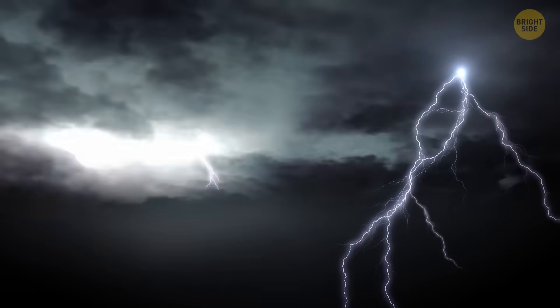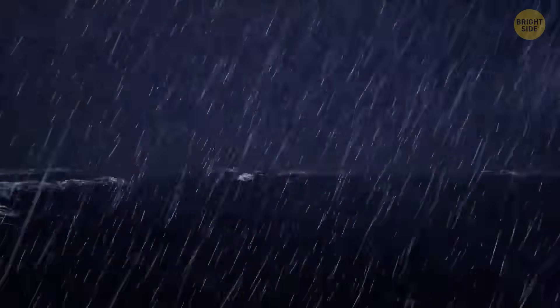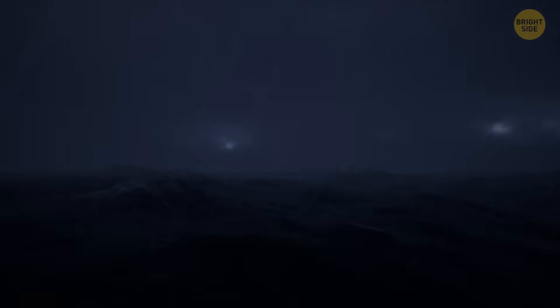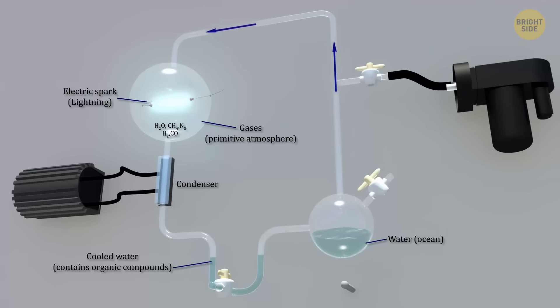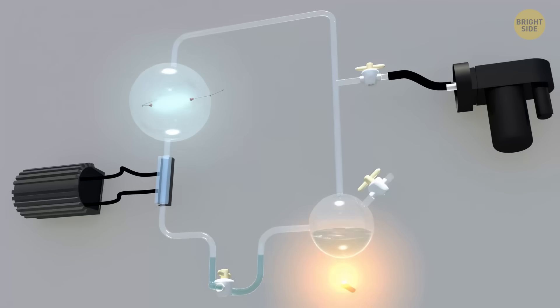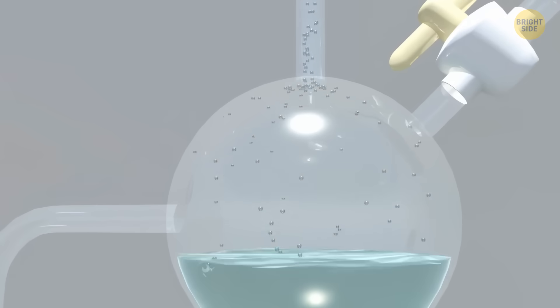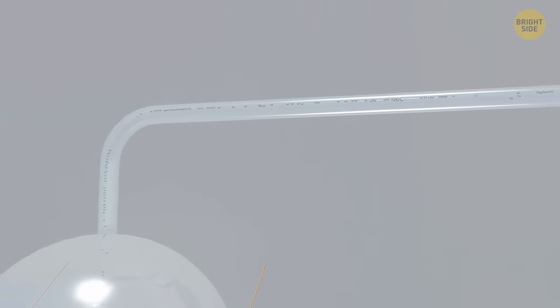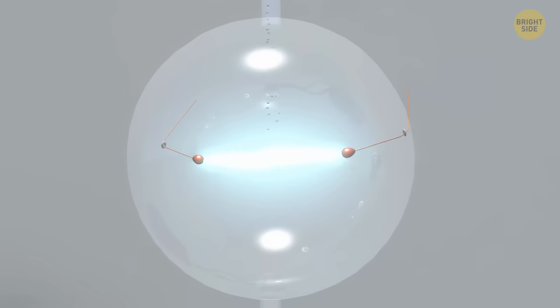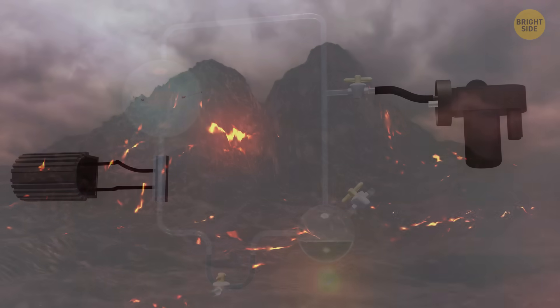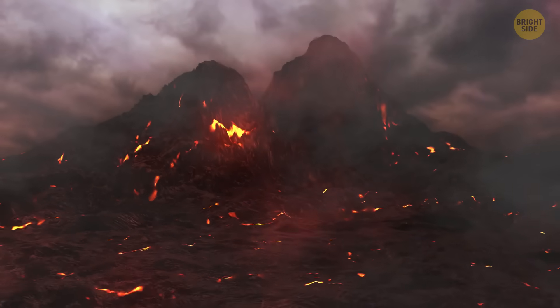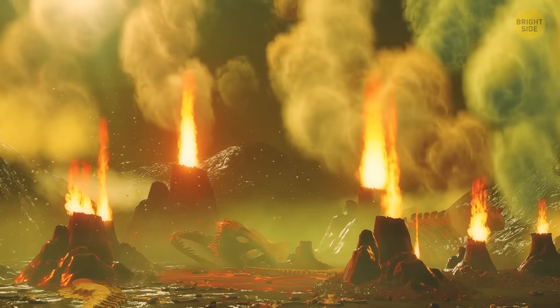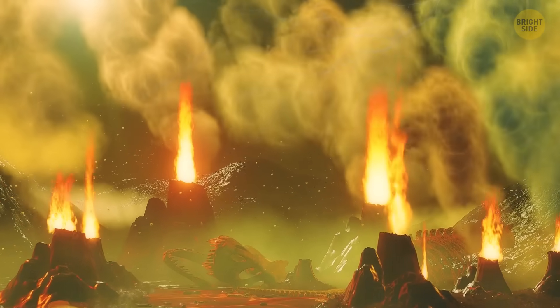Some scientists think lightning helped start life on Earth. The idea is pretty simple. Lightning is a powerful spark, and sparks can cause chemical reactions. In a famous experiment from 1952, scientists showed that electric sparks could turn simple gases like water vapor and methane into amino acids and sugars, which are basic building blocks of life. This suggested that lightning and early Earth storms might have helped create the first life ingredients. But later research showed Earth's early air wasn't exactly like the experiment. Still, some scientists think volcanic clouds could have had the right gases and lots of lightning, making this process possible.